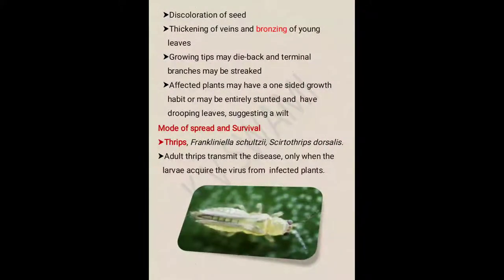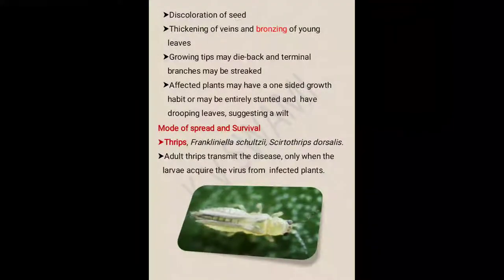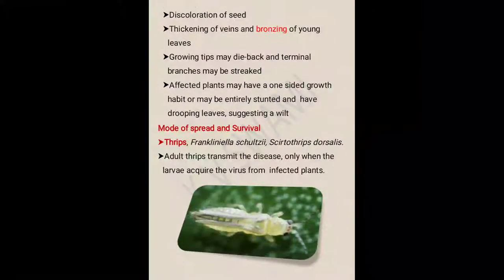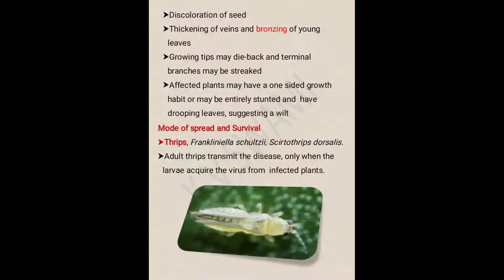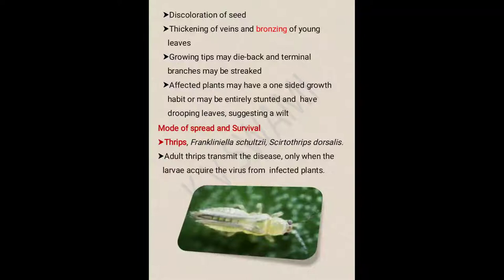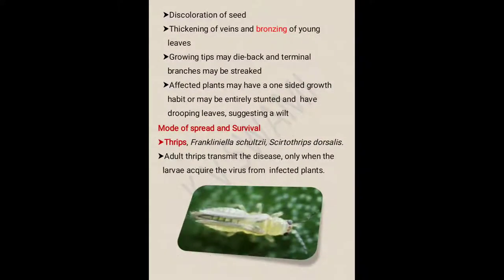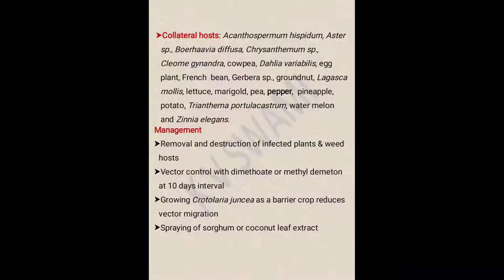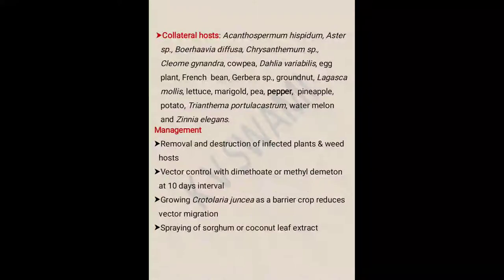Mode of spread and survival — also called perpetuation. Thrips are responsible for carrying viral particles from infested areas to non-infested plants. Adult thrips transmit the disease only when the larvae have acquired the virus from infected plants. The role of collateral hosts is also very important, as they give the pathogen a chance to survive for a longer period.